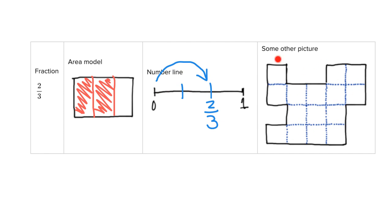Over here we have another picture. To indicate two-thirds using this shape, I need to cut the whole thing into three equal sized pieces. Counting the little squares: one, two, three, four, five, six, seven, eight, nine, ten, eleven, twelve, thirteen, fourteen, fifteen — I have fifteen little squares.